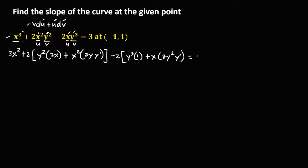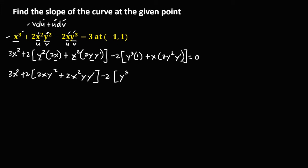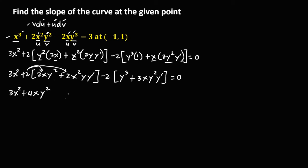Then equals, so for the derivative of a constant, this one is 0. Then simplify: we have 3x squared, then distribute — this one is 4x, y to the power 2, then to this term so we have plus 4x squared times y times y prime.